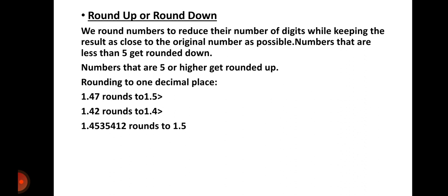What do we mean by rounding up or rounding down numbers? We round numbers to reduce the number of digits. Numbers that are less than 5 get rounded down, while numbers from 5 and above get rounded up. Why? Because from 5 we have 6, 7 — we are ascending. From 4, 3, 2 — we are going down.